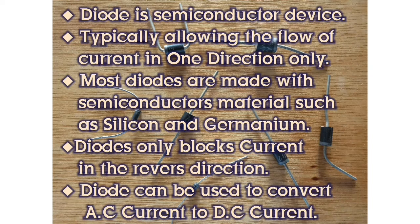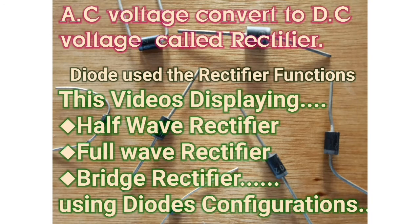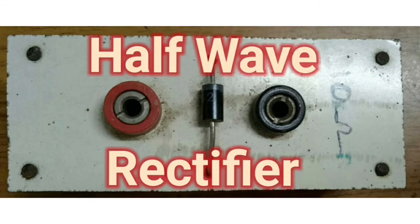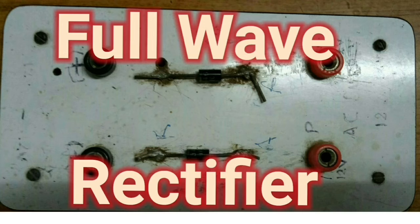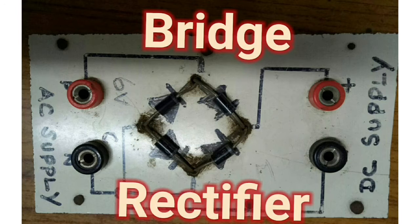So, diode can be used to convert AC current to DC current. AC current converted to DC current is called a Rectifier. This video displays the Half-Wave Rectifier, Full-Wave Rectifier, and Bridge Rectifier diode configurations.